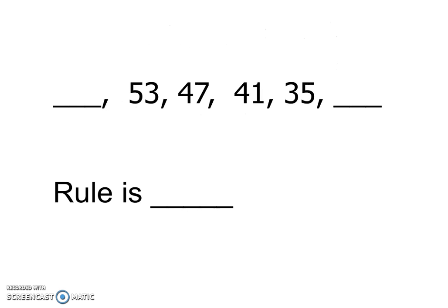and our rule was plus 6. Let's try another one. This time our number is going down. And if we're going down, I know we're either subtracting or dividing. Because that's the only way we can make numbers smaller. Is there something I can divide 53 by to get 47? Nah.